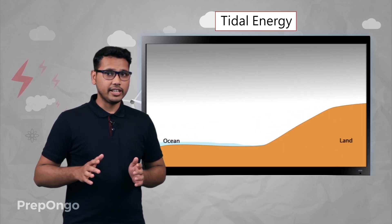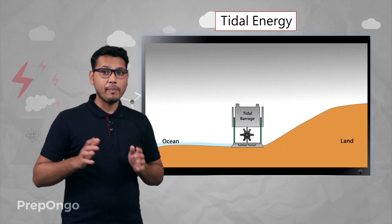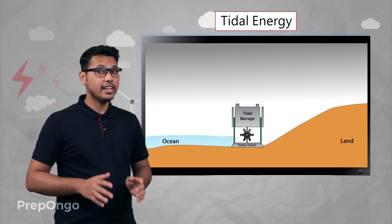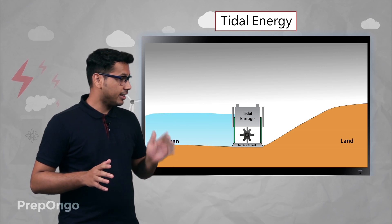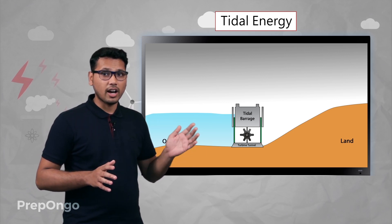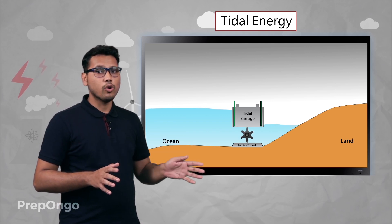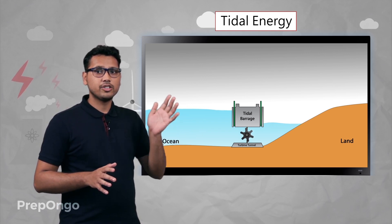To generate electricity, a reservoir is made on a narrow opening of the sea, and when there is high tide, the gates of this reservoir are opened. We have fitted a turbine on the opening from the reservoir to the sea.